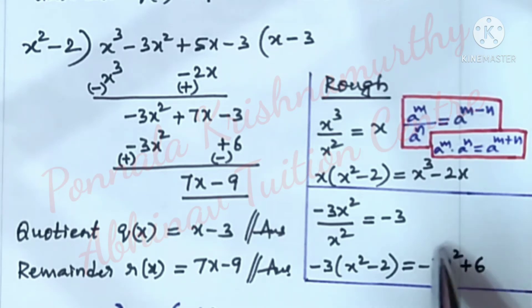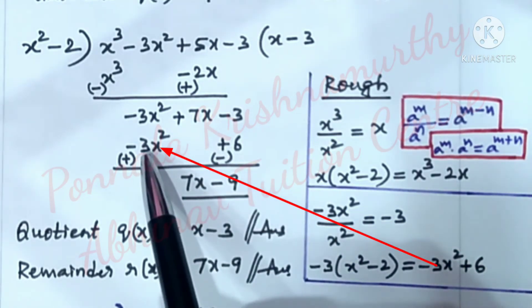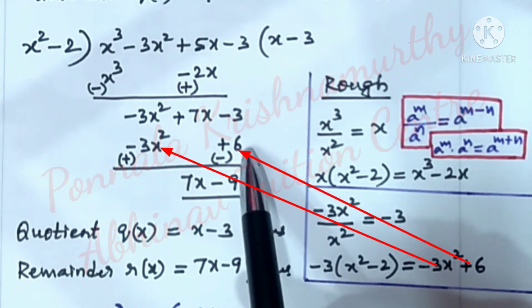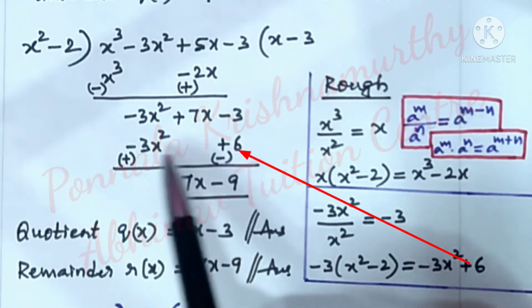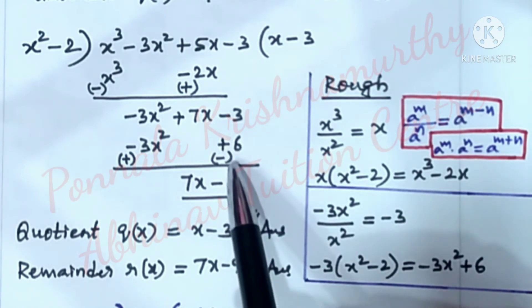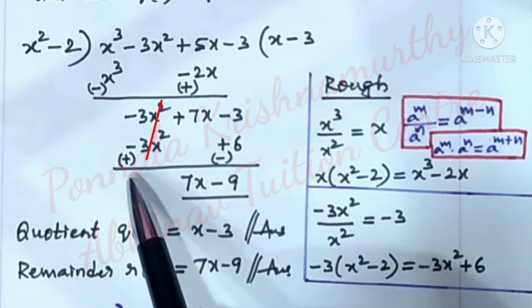We have -3x² + 6 here. This should be written here. -3x² + 6. Change the signs. Minus becomes plus. Plus becomes minus. Now, these two are cancelled.